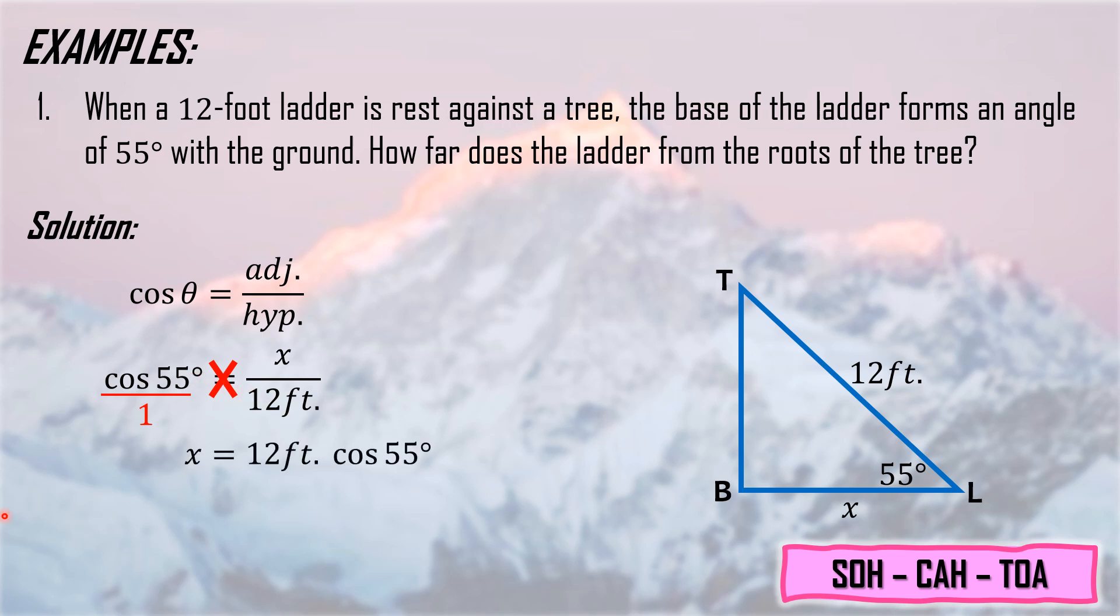This becomes X equals 12 feet times cosine 55 degrees. Using your scientific calculator, press cos then type 55. The answer when rounded to 3 decimal places is 0.574, then multiply by 12 feet. The value of X is 6.89 feet or 7 feet. Therefore, the ladder is 7 feet away from the roots of the tree.